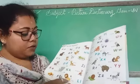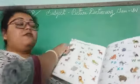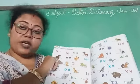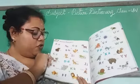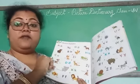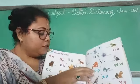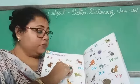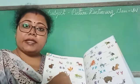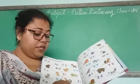Then L for Lion. We will do up to L. Again I am saying: A for Ant, B for Bear, C for Cat, D for Dog, E for Elephant, F for Fish, G for Goat, H for Hen, I for Iguana, J for Jackal, K for Kangaroo, L for Lion.